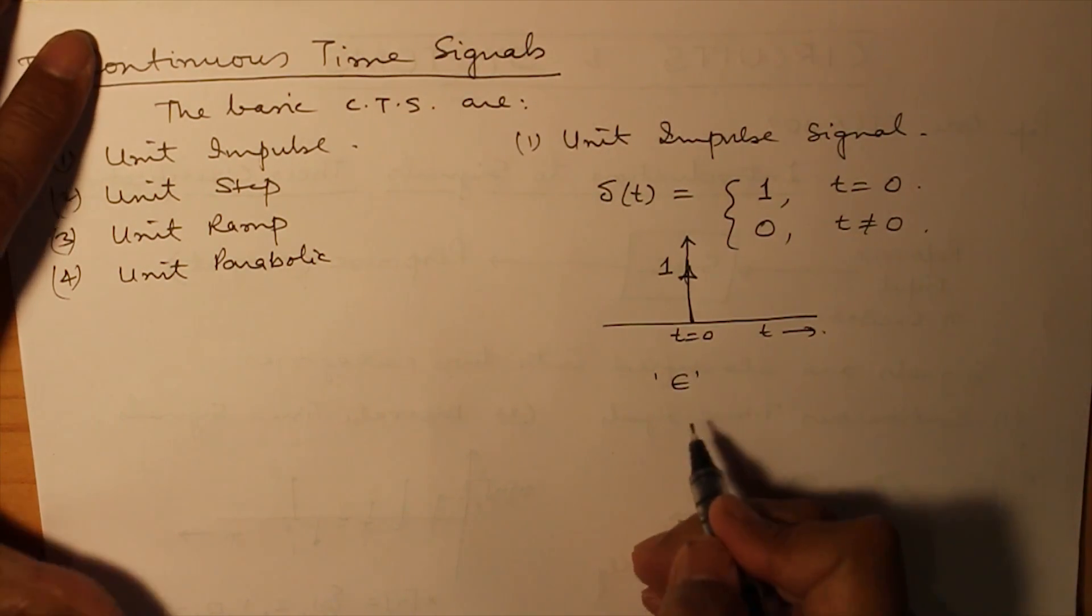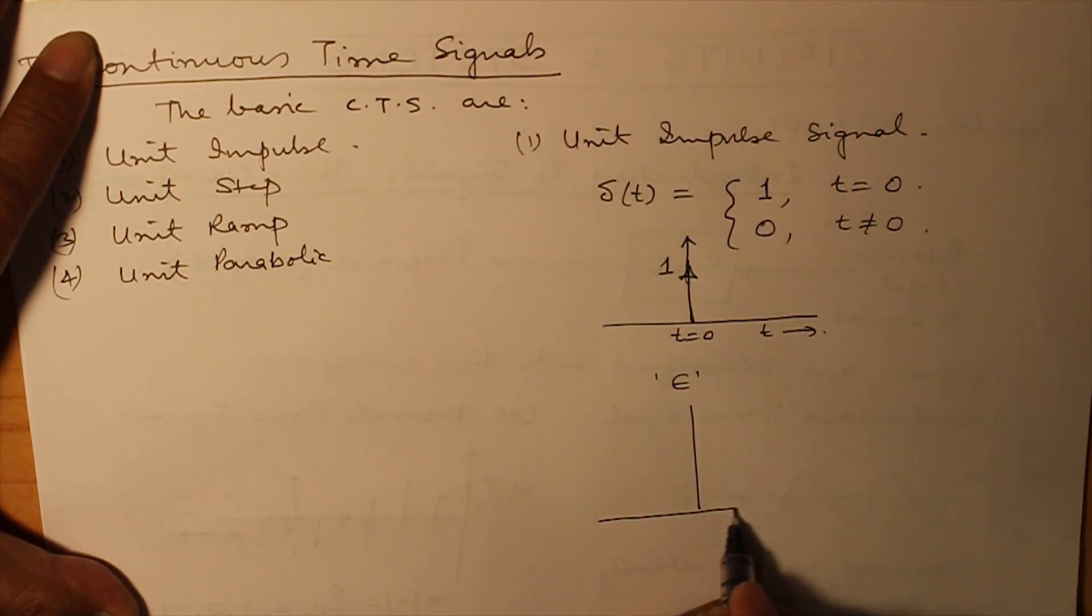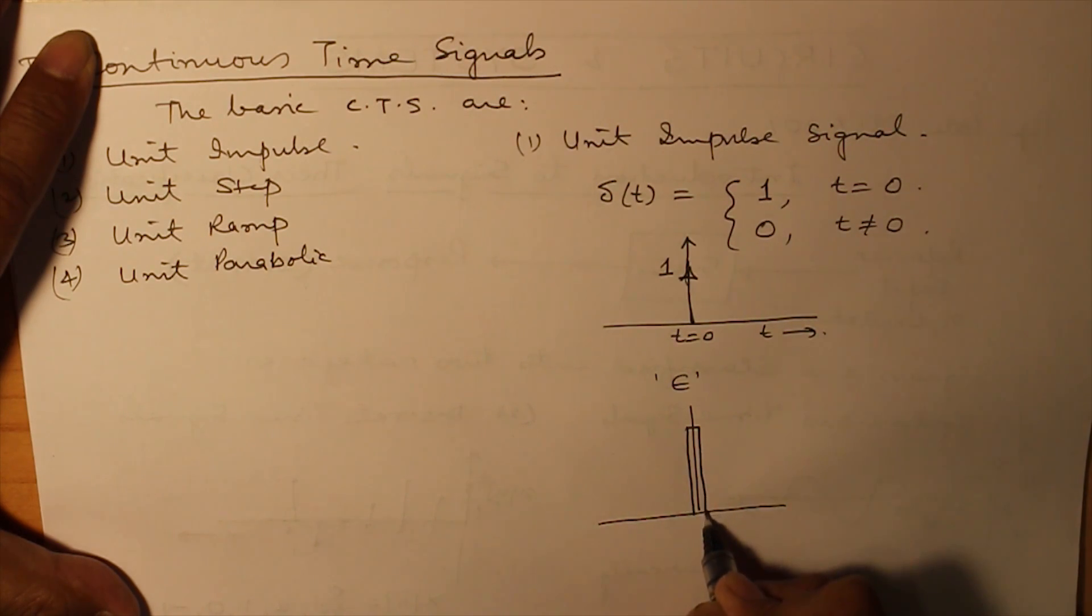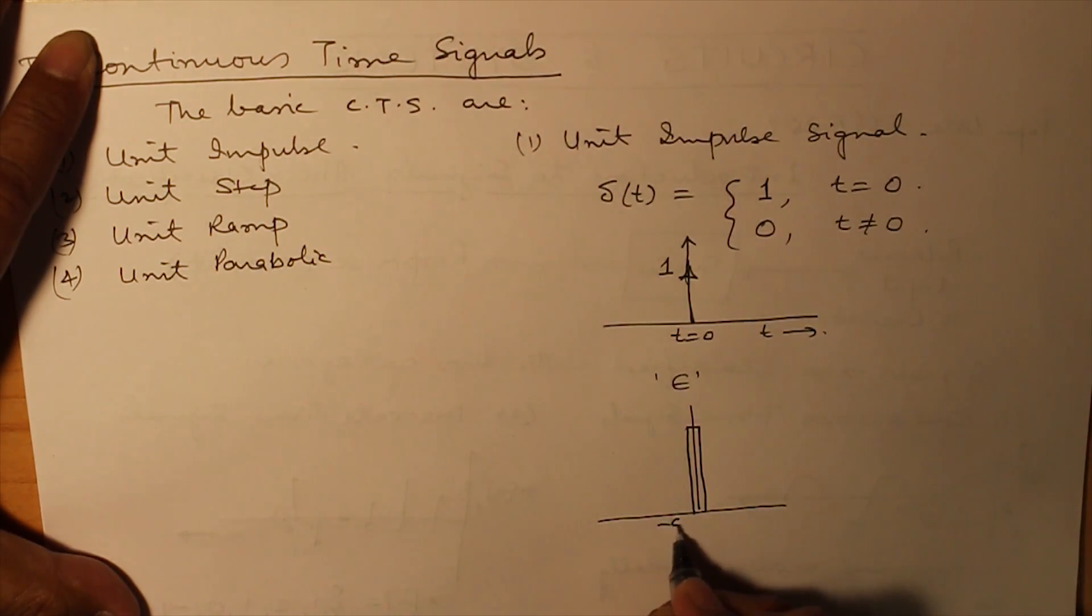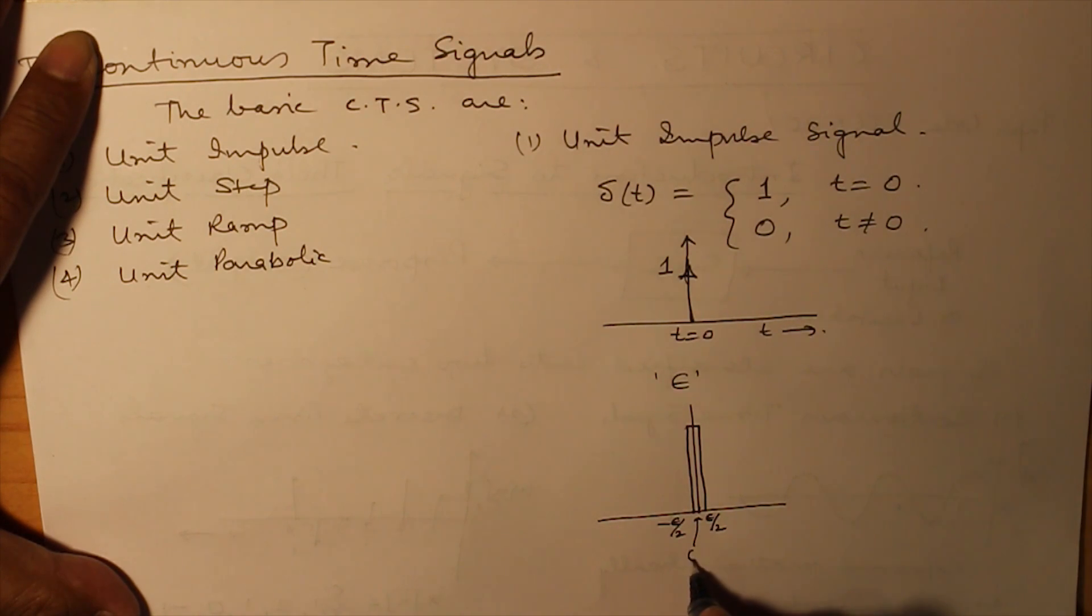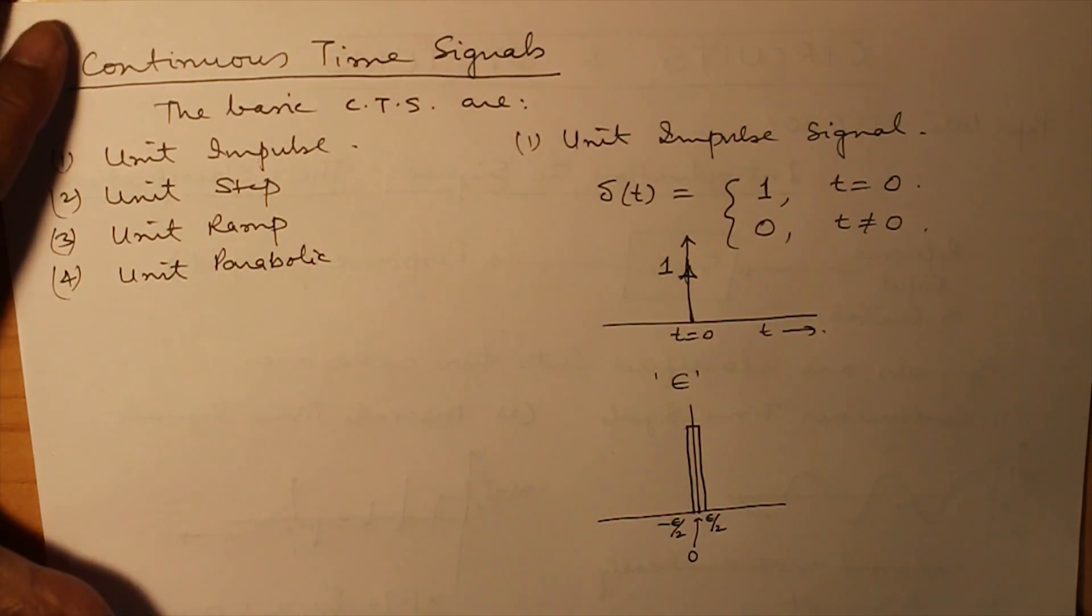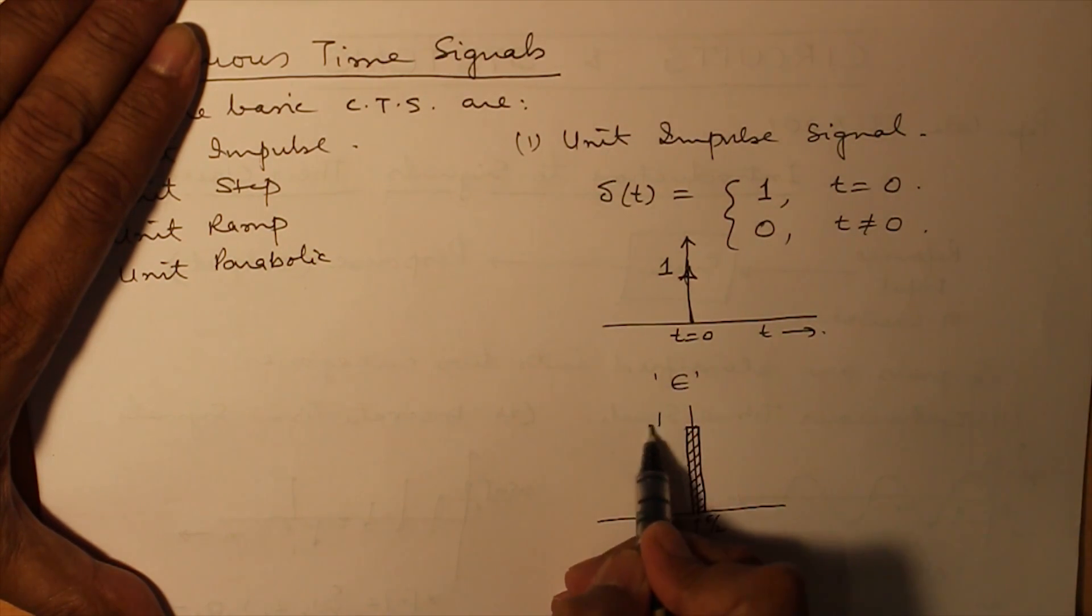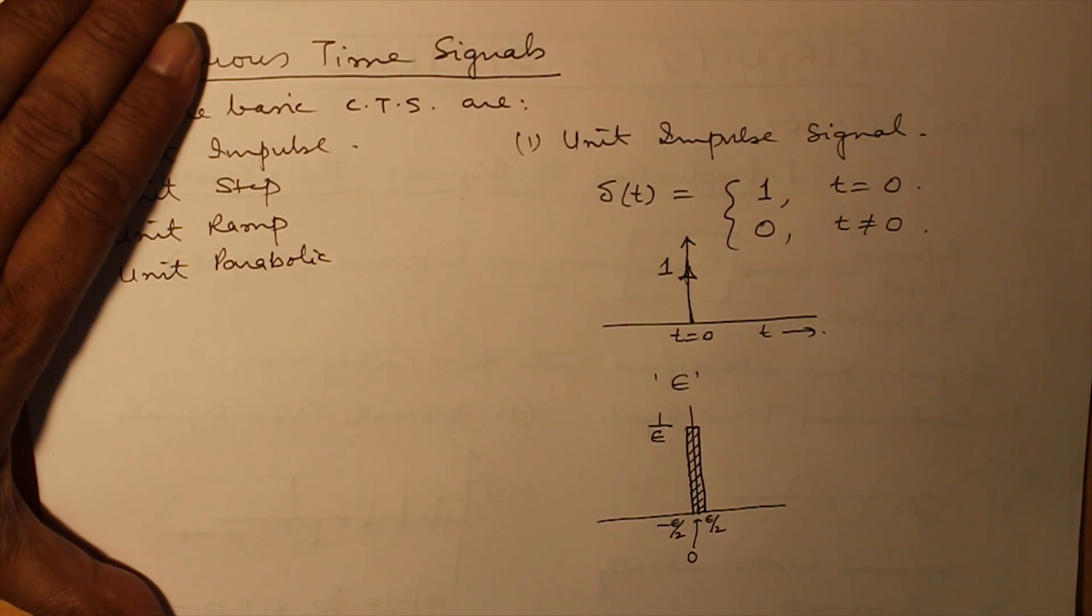So, this epsilon can be viewed, I am magnifying it and re-plotting the value of delta. This interval is epsilon. It starts from minus epsilon by 2 to epsilon by 2 and in between there is origin which is O. This interval epsilon and the area under the curve being unity dictates that the magnitude of this impulse here is 1 over epsilon.